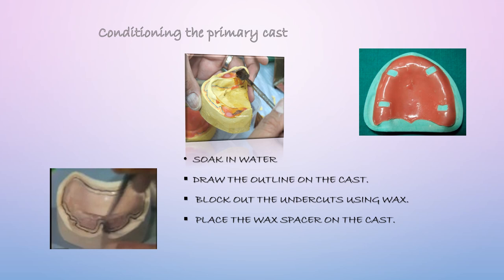Before making the custom tray, the primary step is to condition the primary cast — also called the preliminary or diagnostic cast. Once you make a primary impression and pour it with dental plaster or POP (type 1 dental gypsum), you obtain a cast, soak it in water, and outline it. On the cast, the first line marks the depth of the sulcus; the second line, 2 mm short of the sulcus depth, demarcates the extension of the custom tray; and 1 mm short of that is the spacer wax.